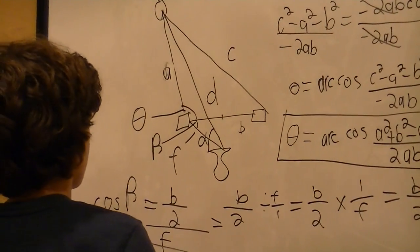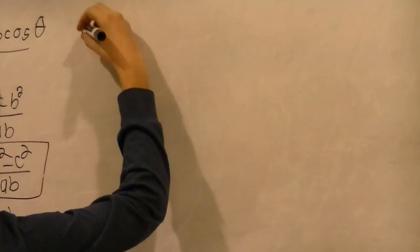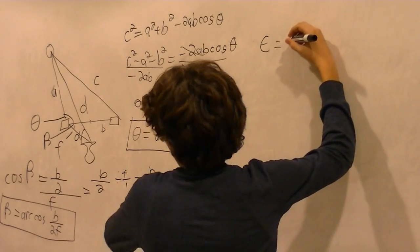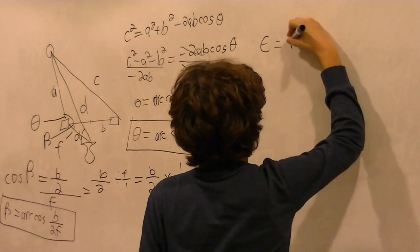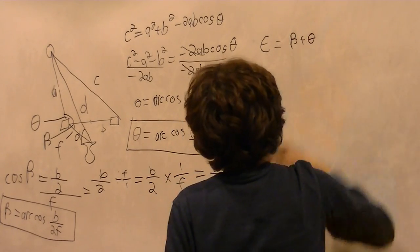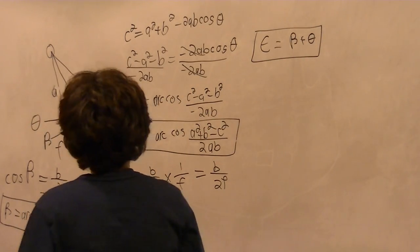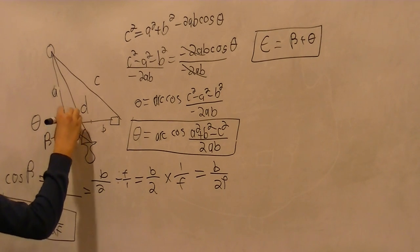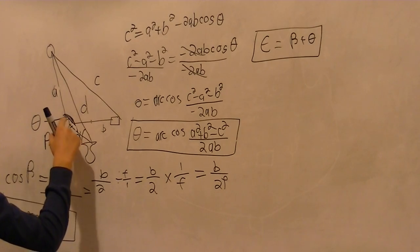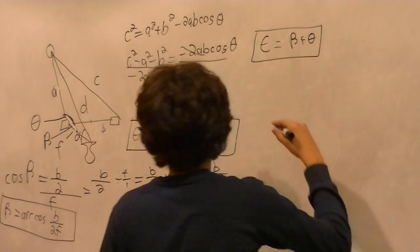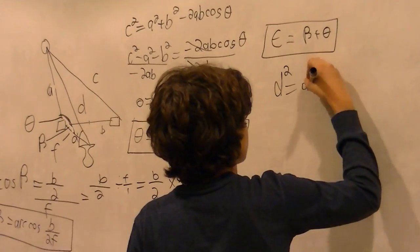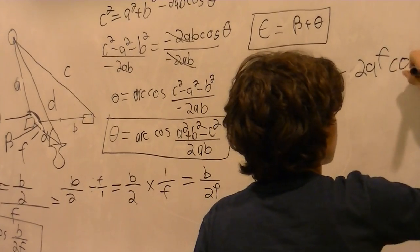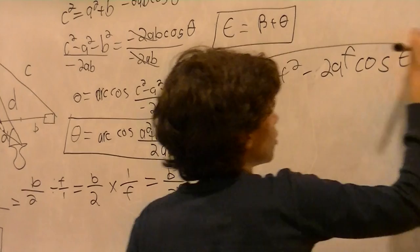So now that I have my theta, I'm going to say that epsilon is equal to beta plus theta. Now that I have that, I'm going to calculate my distance. Can you show in the picture which one is epsilon — this complete angle? Now d squared is equal to A squared plus F squared minus 2AF cosine epsilon. Take the square root of both sides and you have your distance.